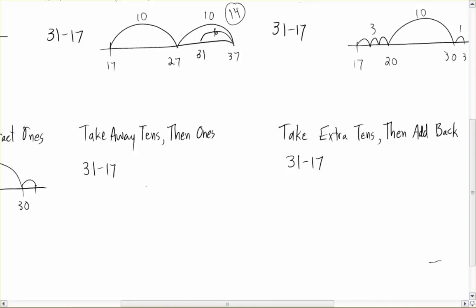Better is to take away tens and then ones in this case. So here I'd start at 31 and let's take away 10, get me down to 21. And then I can take away 7 from there. Let's go ahead and take away 1 and then 6 more. And that will get me down to 14.